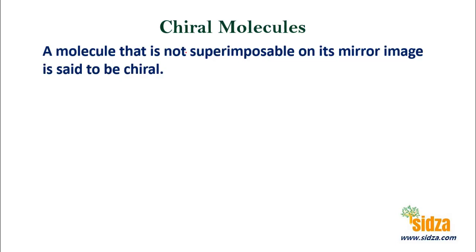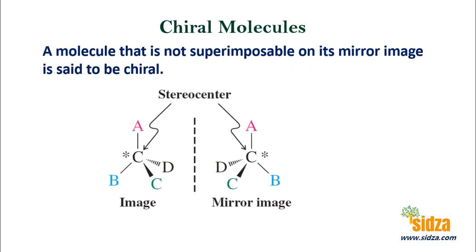A molecule that is non-superimposable on its mirror image is called chiral. So like this molecule — a carbon with four different groups attached — if you look through the mirror, this will be its mirror image. If you try to put this mirror image on the original object, the groups will not superimpose. The A will superimpose with A, but these three groups will not superimpose completely. So we say these two molecules are non-superimposable. This is called a chiral center. A chiral center or stereocenter is a carbon attached with four different groups. A carbon attached with four different groups is chiral. For a molecule to be chiral, you should have a carbon atom attached with four different groups.